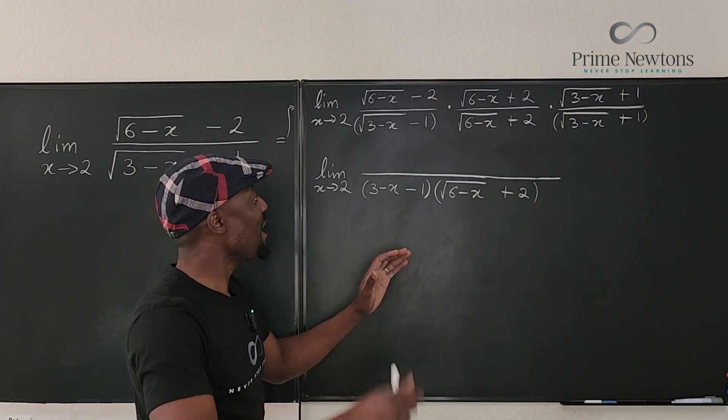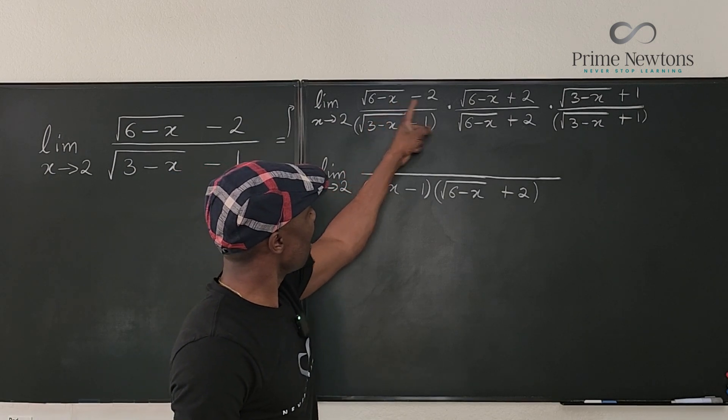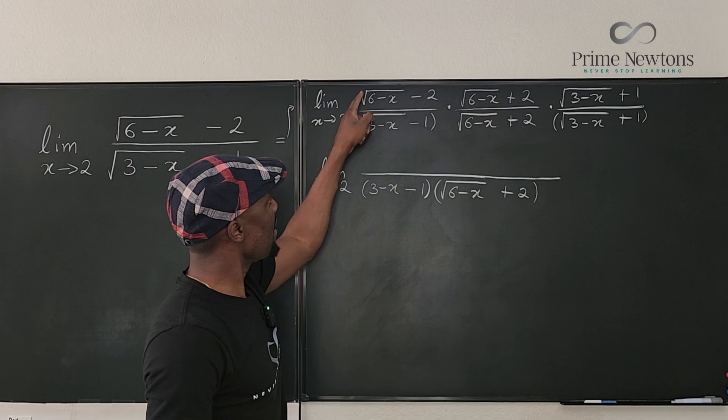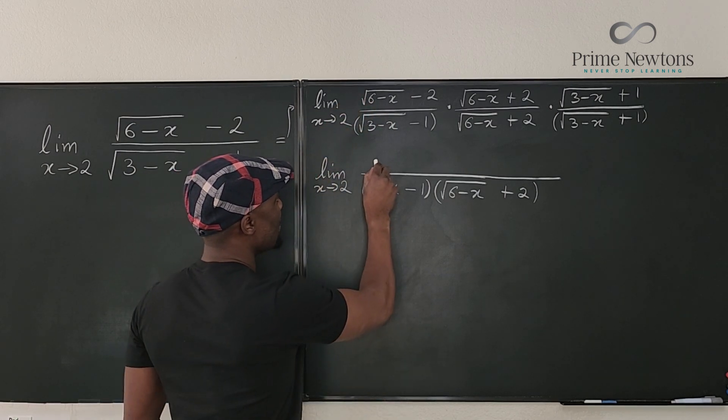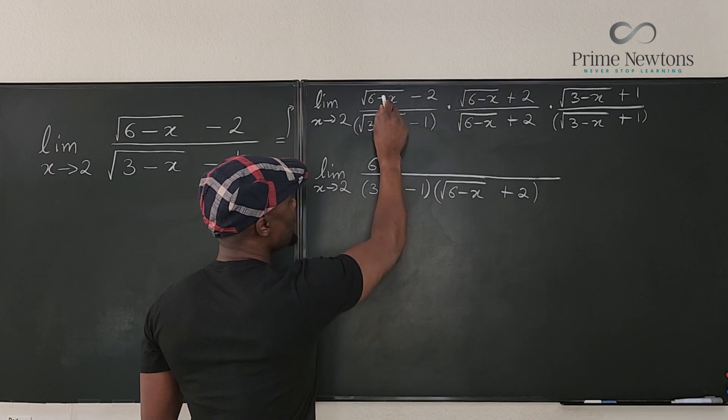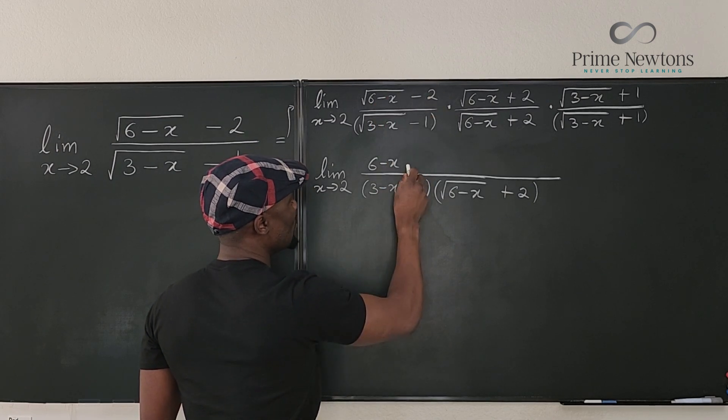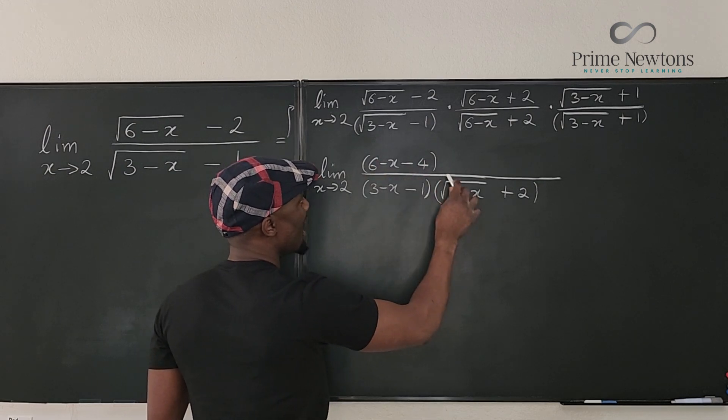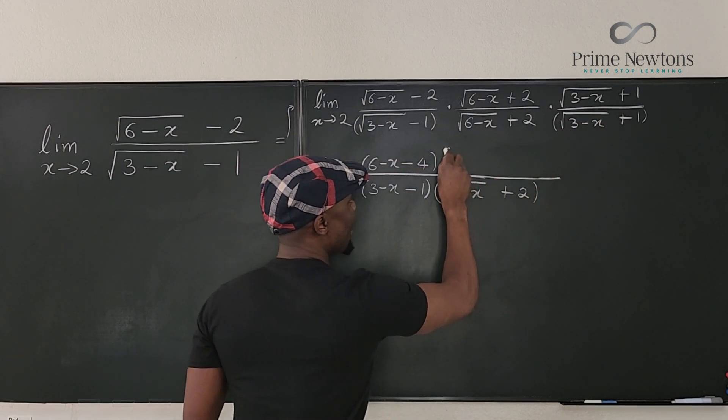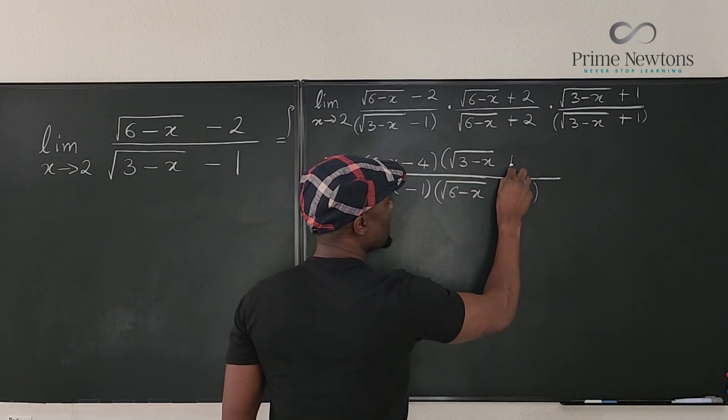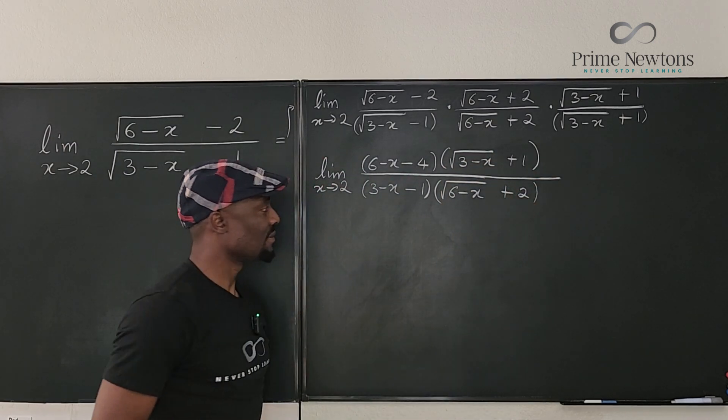And on top, we do the same thing. This and this will behave the same way as these two have behaved. We're going to get rid of the square root sign. So it's going to give us 6 minus x. So we've removed the radical and the square of this will be 4. So it's minus 4. That's what you have here. And then we didn't use this, so we just write it. It's going to be the square root of 3 minus x plus 1.